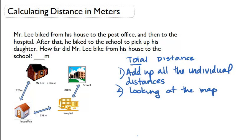So let's start off. Mr. Lee biked from his house to the post office. So let's find house to post office. Let's look at our map. We know Mr. Lee's house is here, the post office is here. The map tells us that the distance between the house and the post office is 120 meters. So that's distance A.